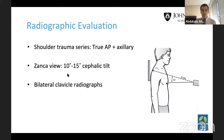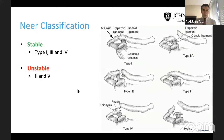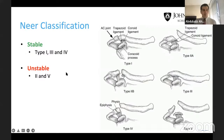In terms of classification, we use the Neer classification, which has five types. The main important thing is to determine whether a fracture is stable or not. Stable fractures are types 1 and 3, while unstable ones are types 2A, 2B, and 5. As the fracture goes medial to the ligaments or disrupts one of the CC ligaments, the fracture becomes unstable — and that happens in type 2 and type 5. Types 1 and 3 are generally stable fractures.